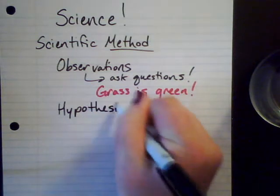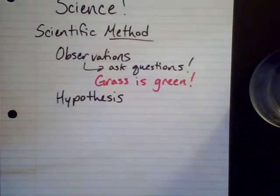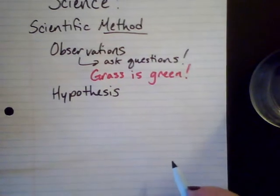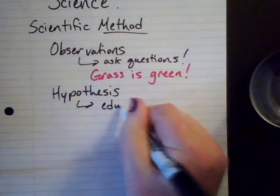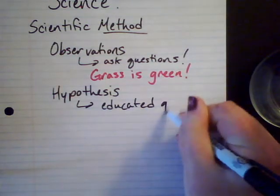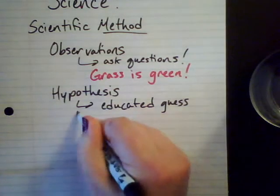A hypothesis is something that explains your observation — it comes up with some sort of idea of why something happens. Oftentimes a hypothesis is regarded as an educated guess, which is an okay way to think about it. It's really just a statement of why something happens.